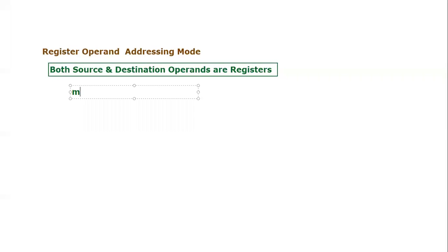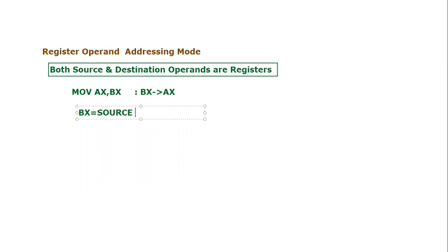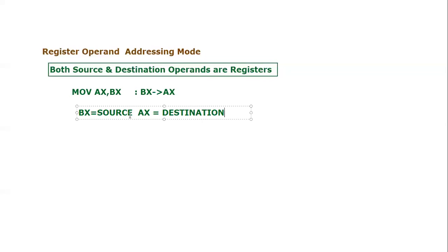For example, we can give the instruction: MOV AX, BX. The meaning of this instruction is to move the content of BX into AX. So BX is the source operand and AX is the destination operand. Both operands are registers, which means this specific instruction is using register operand addressing mode.